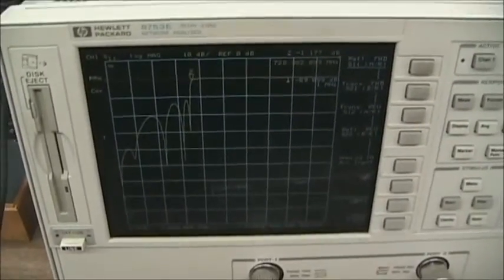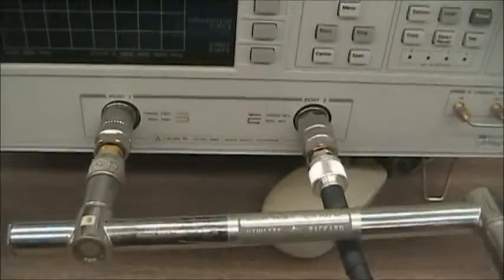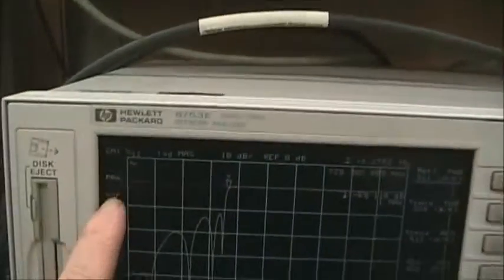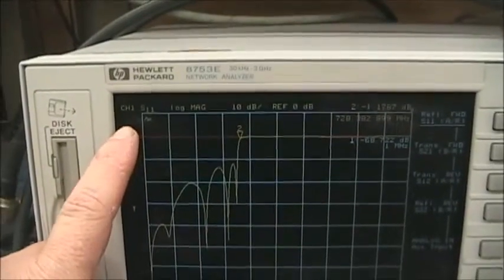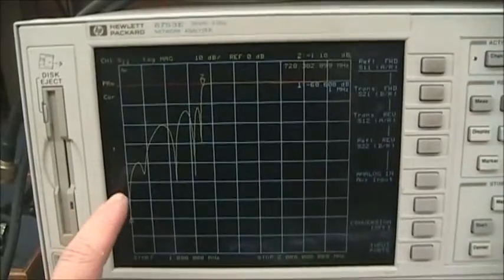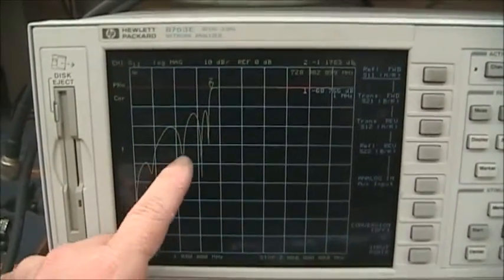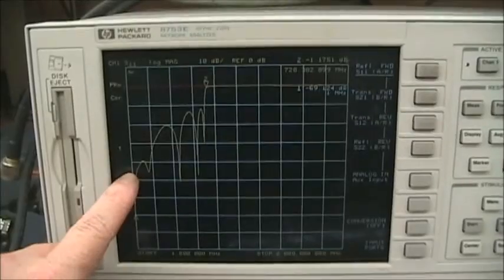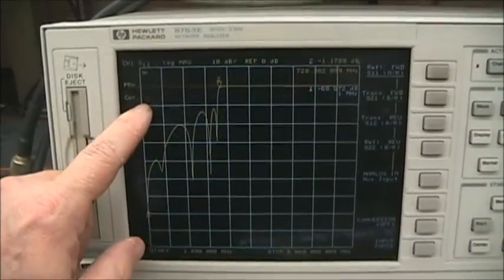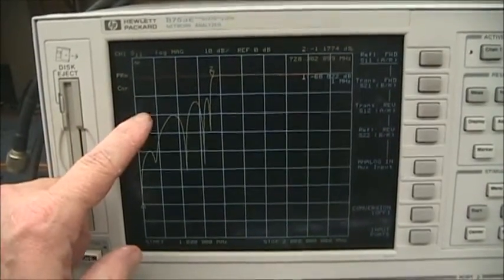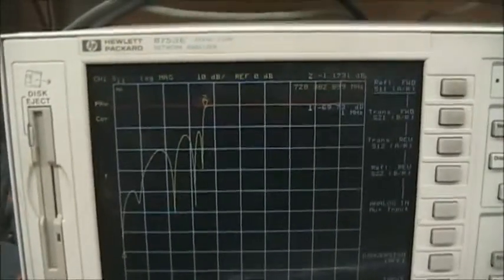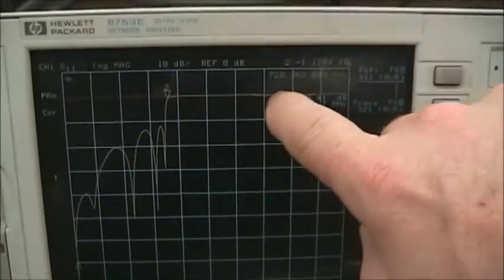After putting the filter back on port one and port two, we see the display. This is the S11 display, which is the input match, or input reflection coefficient. We see in this region that it's fairly well matched. Remember, minus dB is good on return loss. There's minus 10 dB, minus 20 dB, minus 30, even minus 40 dB. And then out in the other area, which is the low-pass area, we see it's completely acting as a reflection.